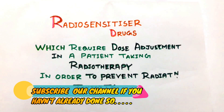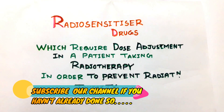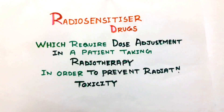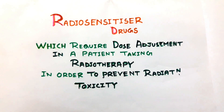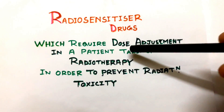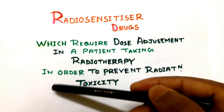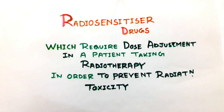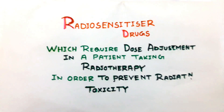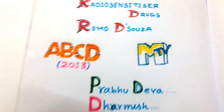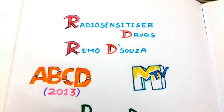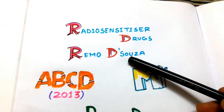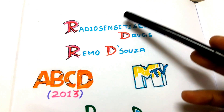Welcome back friends. Today's topic for mnemonic is radiosensitizer drugs — that is, which drugs require dose adjustment in a patient taking radiotherapy in order to prevent radiation toxicity. Our mnemonic is Ramo de Souza.